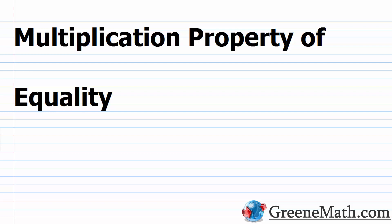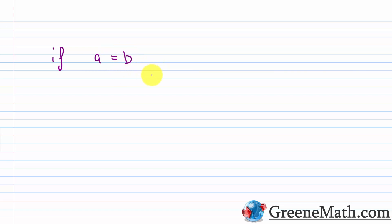In this lesson, we want to review the multiplication property of equality. In our last lesson, we reviewed the addition property of equality. This property allows us to add or subtract the same value to or from both sides of an equation. So generically, if we have A equals B, we can add C to each side of the equation and maintain that equality. This allowed us to solve basic one-step equations with just addition and subtraction.